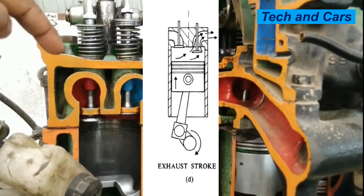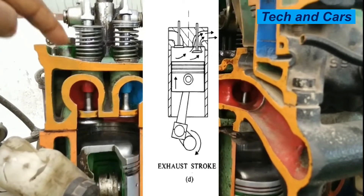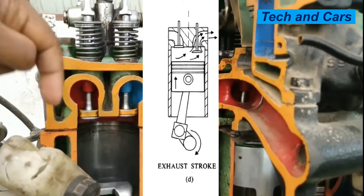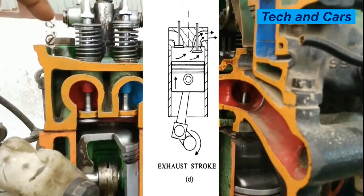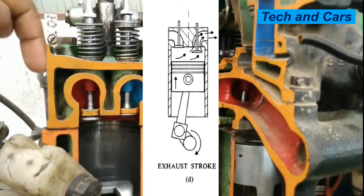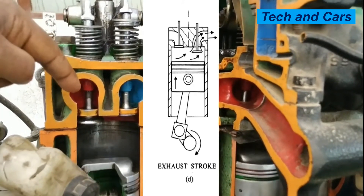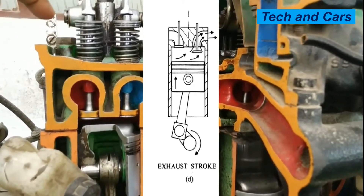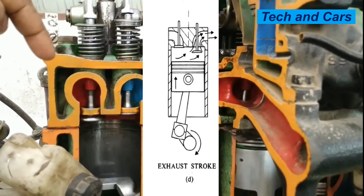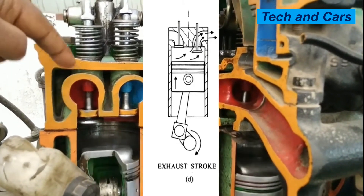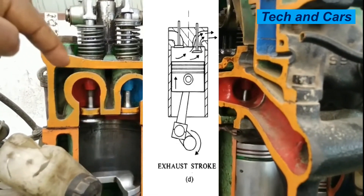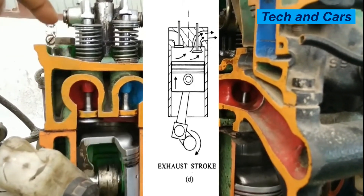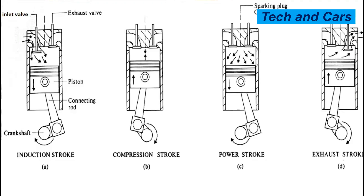During the exhaust stroke, with the exhaust valve already opened, the piston starts moving up, sweeping the burnt gas out of the cylinder. When the piston reaches TDC, it will be ready to descend again, leading to another intake stroke.